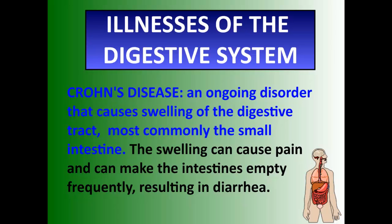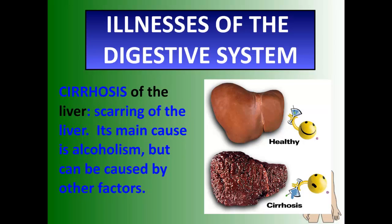Crohn's disease is an ongoing disorder that causes swelling of the digestive tract, most commonly in the small intestine. This swelling can be incredibly painful, can make the intestine empty very frequently, and can result in diarrhea. You can also have cirrhosis of the liver, normally caused by alcoholism. When your liver stops functioning, it can no longer produce bile, which is needed for proper digestive functioning. The liver becomes scarred and non-functional, and this has other detrimental effects we'll discuss when covering the excretory system, mainly the removal of toxins.